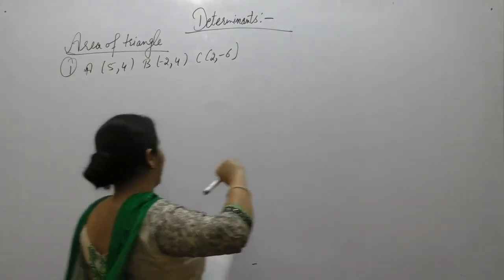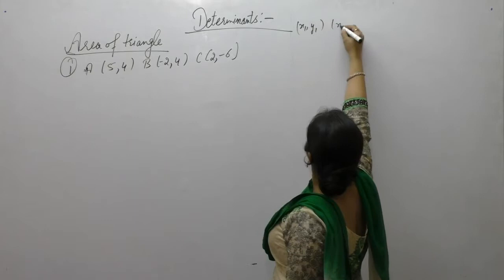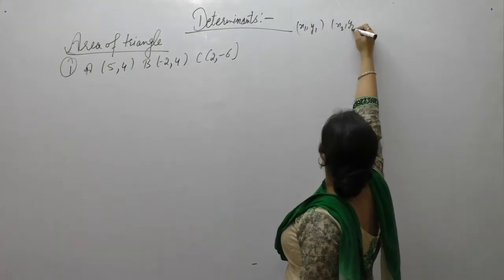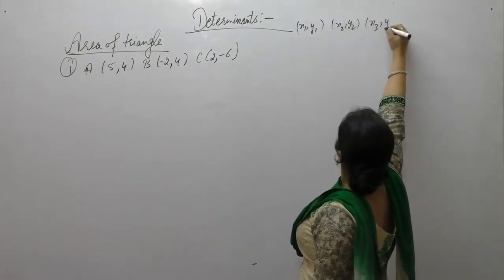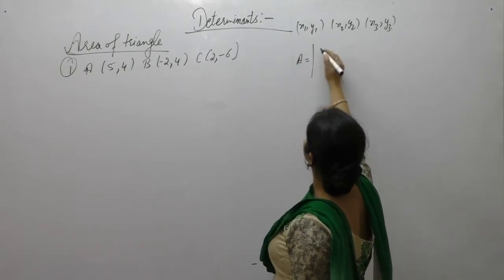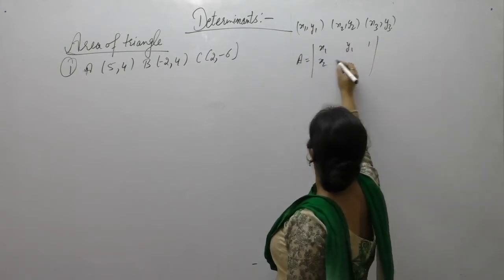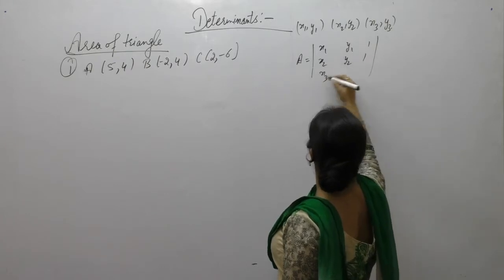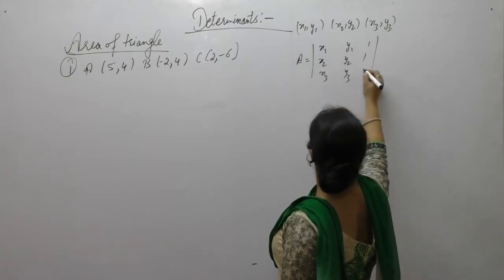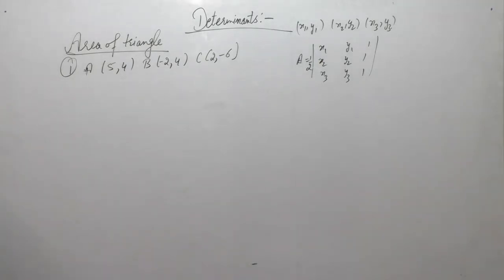We know that if we have coordinates x1, y1, x2, y2, x3, y3, then area of triangle is equal to one-half times the determinant with rows (x1, y1, 1), (x2, y2, 1), (x3, y3, 1). This is equal to the area of triangle.